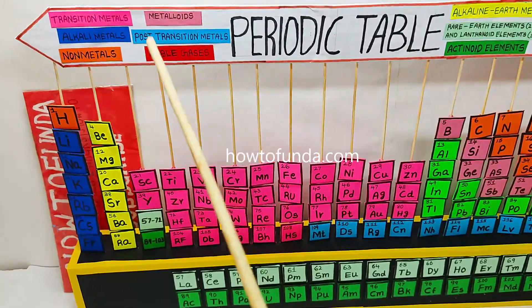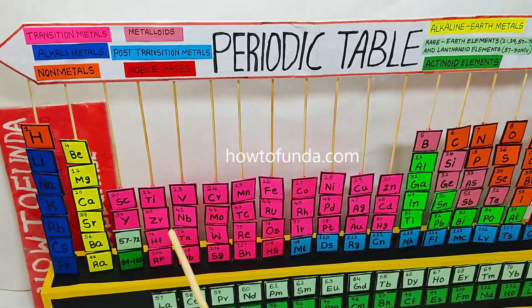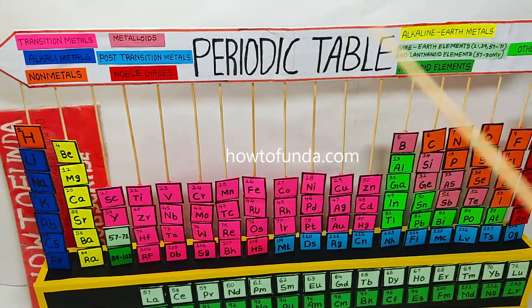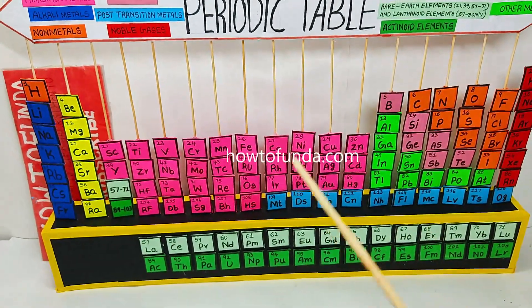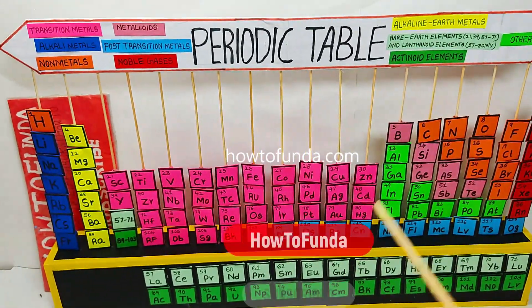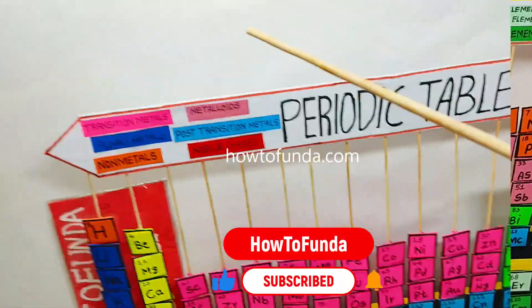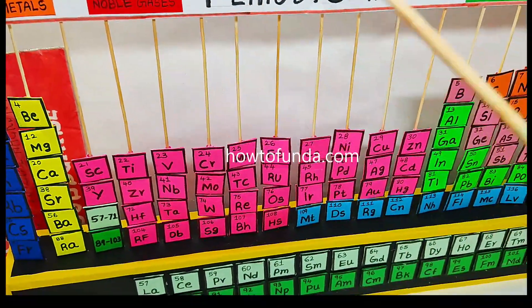To conclude, this periodic table is like a map for chemistry. It helps us to understand and predict the behavior of elements. Making this 3D model helped me to understand element grouping better, and it was really fun to create.